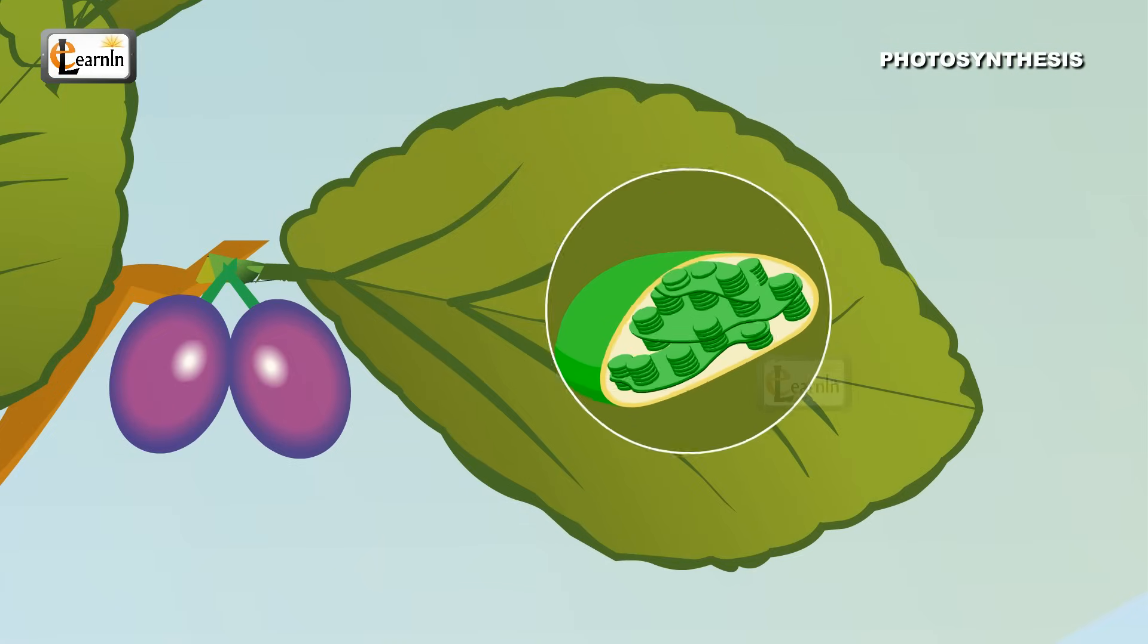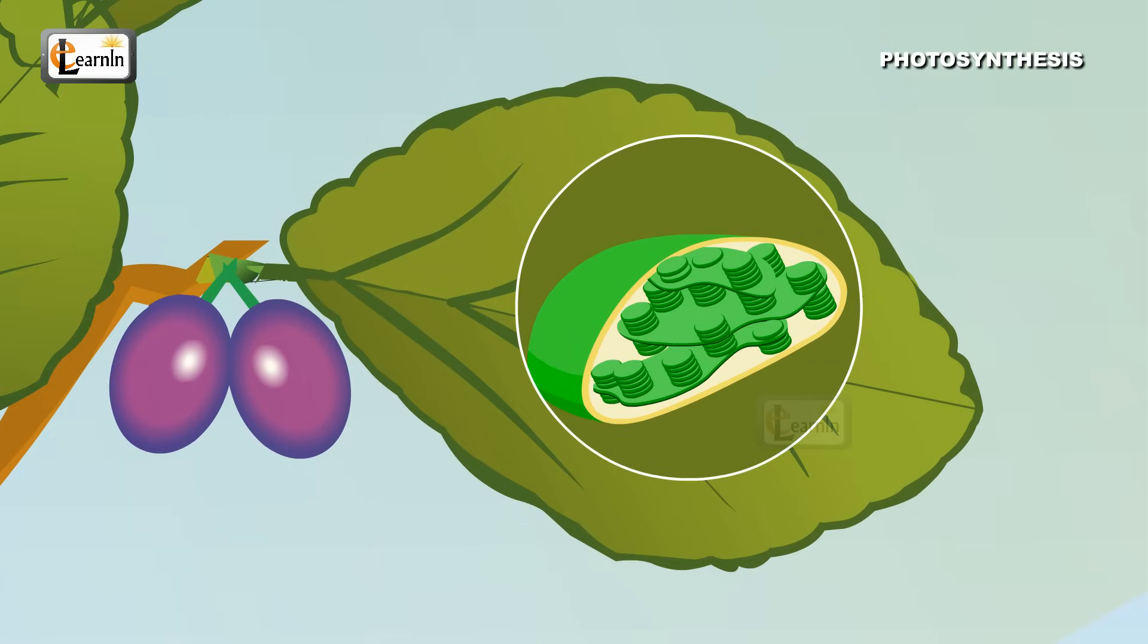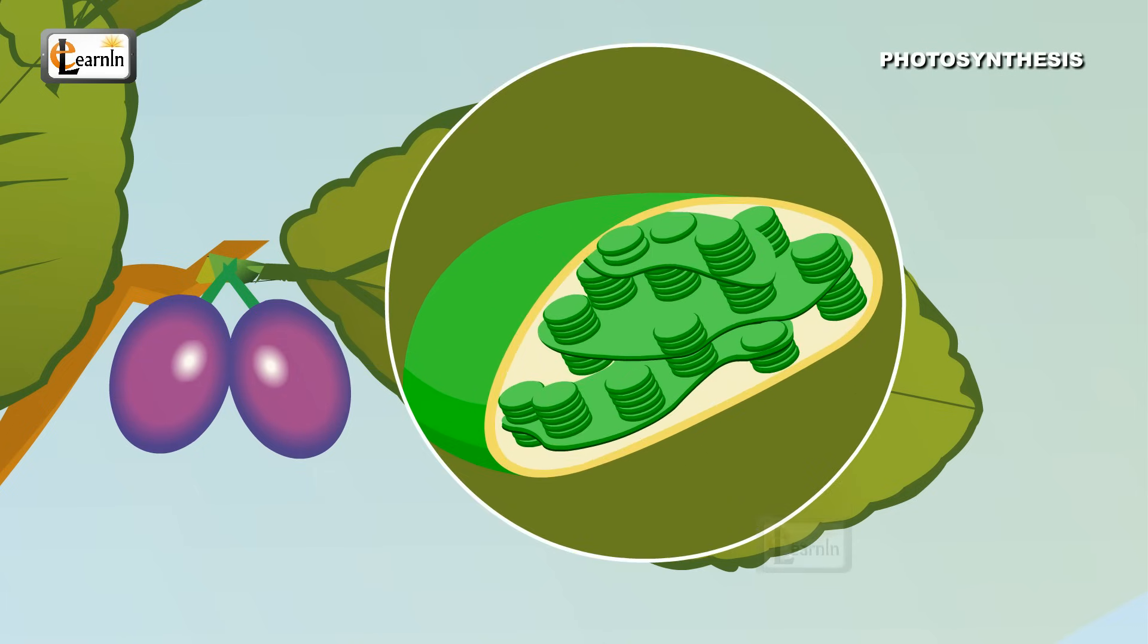Leaves have important cells called mesophyll cells. These cells contain a green color component called chloroplast. This chloroplast is responsible for the green color of plants and leaves.